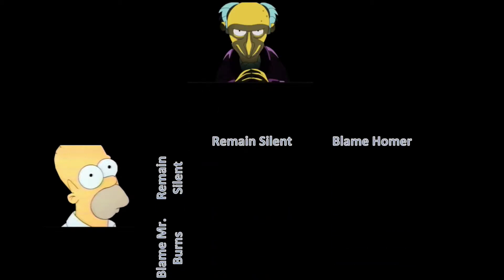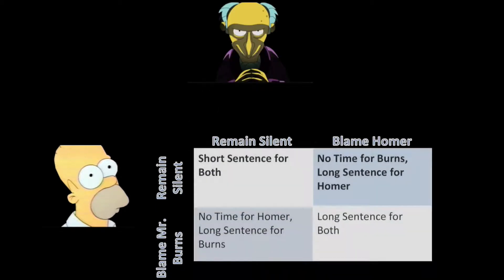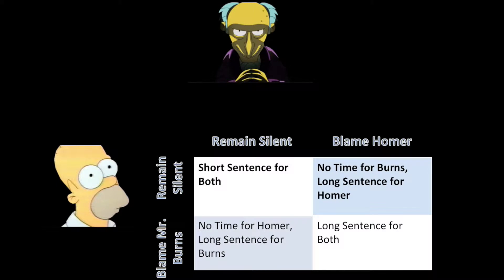Mr. Burns is seeing these same options, and the result of what each of them does can be summarized in this table. If they both decide to remain silent, they'll both end up with fairly short sentences. If Mr. Burns decides to blame Homer while Homer remains silent, Mr. Burns will get no jail time but Homer will end up with a long sentence. If they both choose to blame each other, they will both end up in jail for a long time.